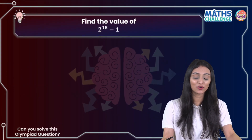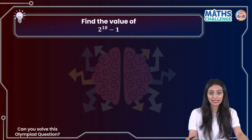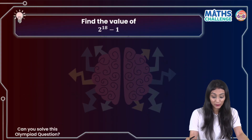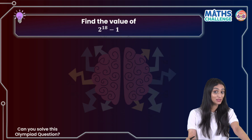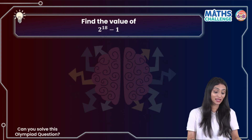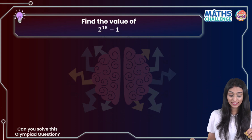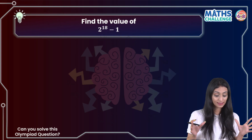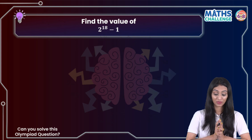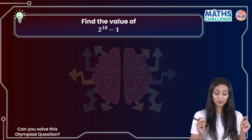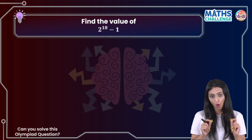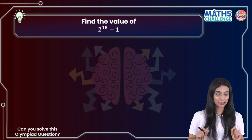Find the value of 2 to the power 18 minus 1. Well, seems like a tricky one, right? So let's see how we can solve this. This is basically an Olympiad question, and we'll be using the basic concepts that we have already learned in our syllabus.